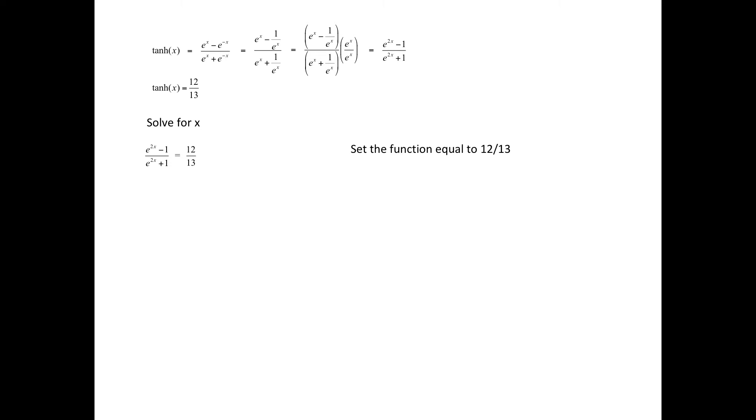So we could begin by setting the function equal to 12 13ths. So we would have e to the 2x minus 1 over e to the 2x plus 1 equals 12 13ths.